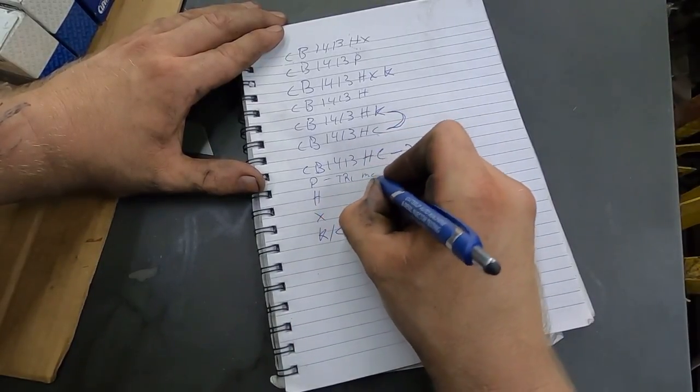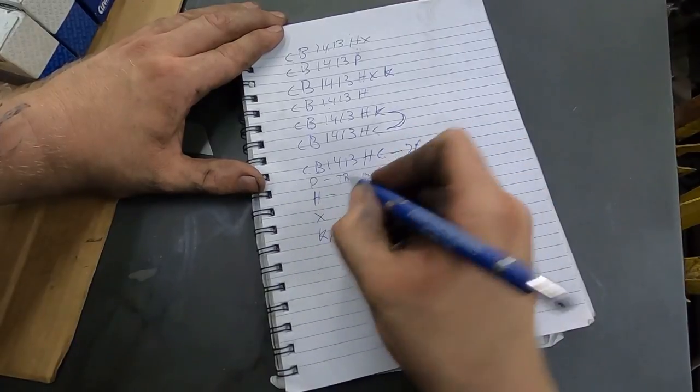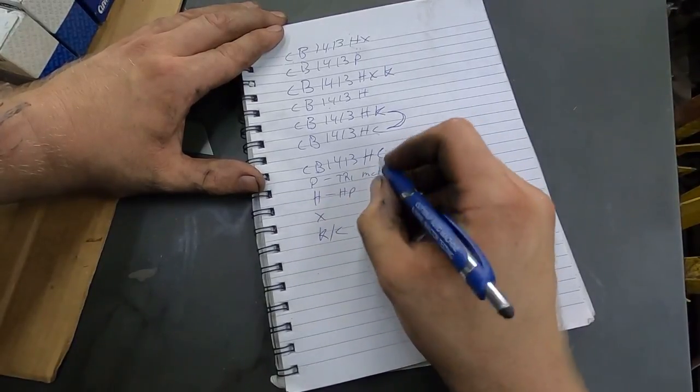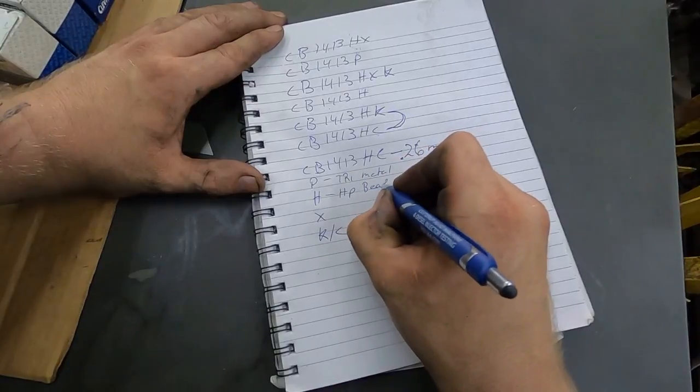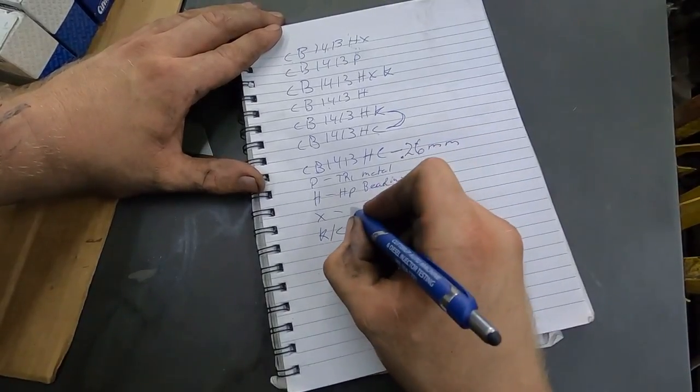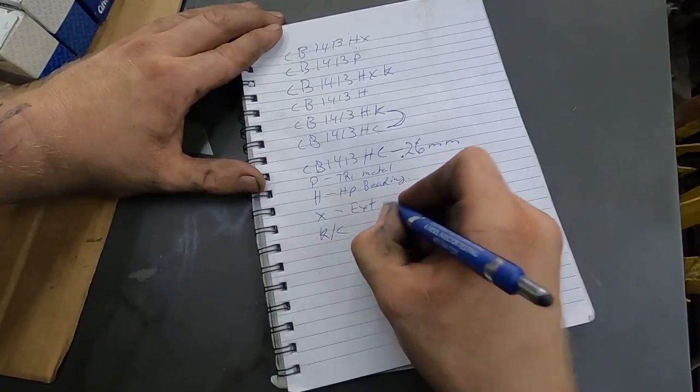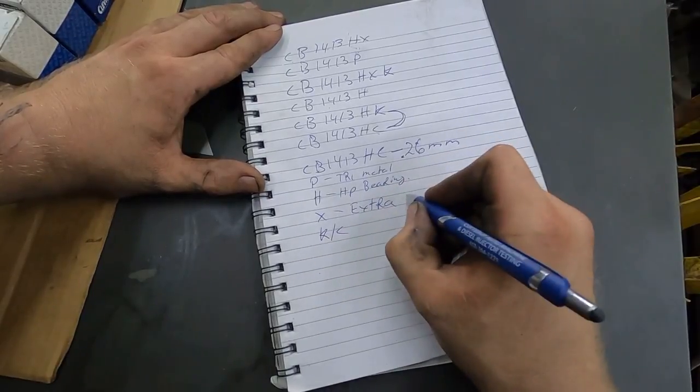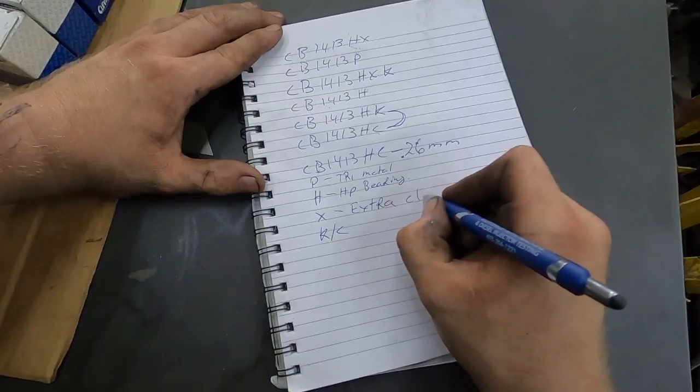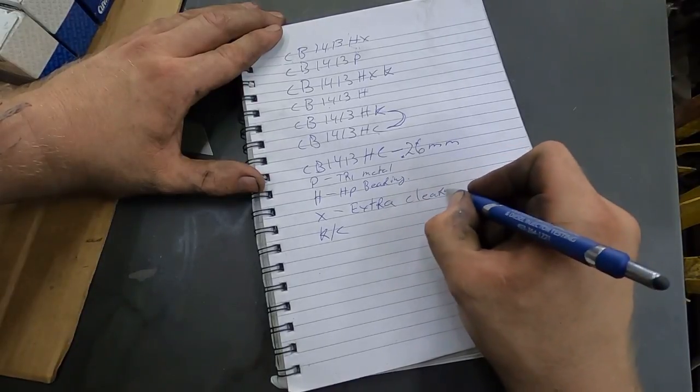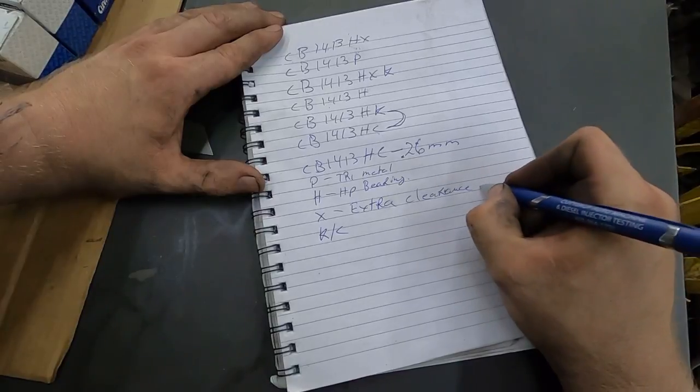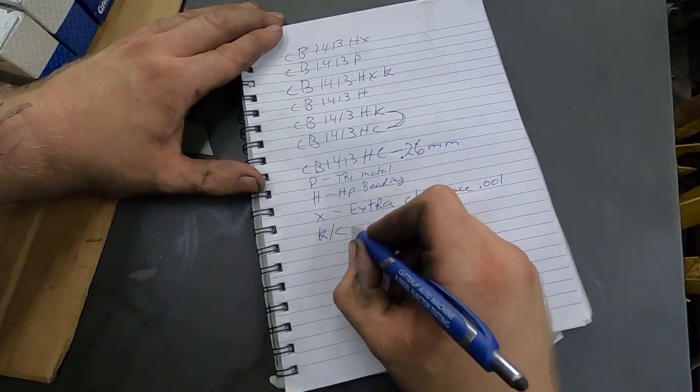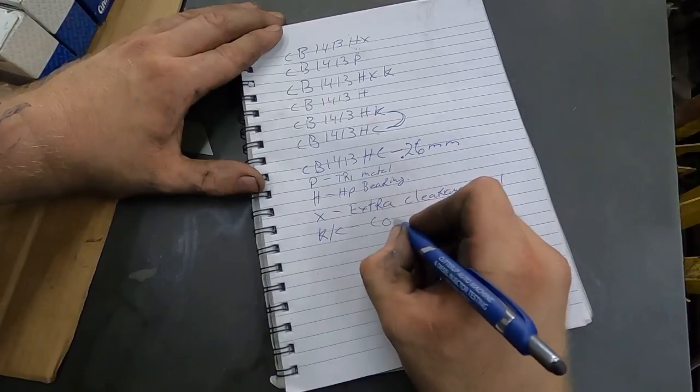Basically, actually I guess I should just write this out just to make it easy for you. H P X C or K or C. So tri-metal tri-metal bearing HP bearing, extra clearance, extra clearance. See if I can spell, probably not. Clearance, one thou, and then coated.